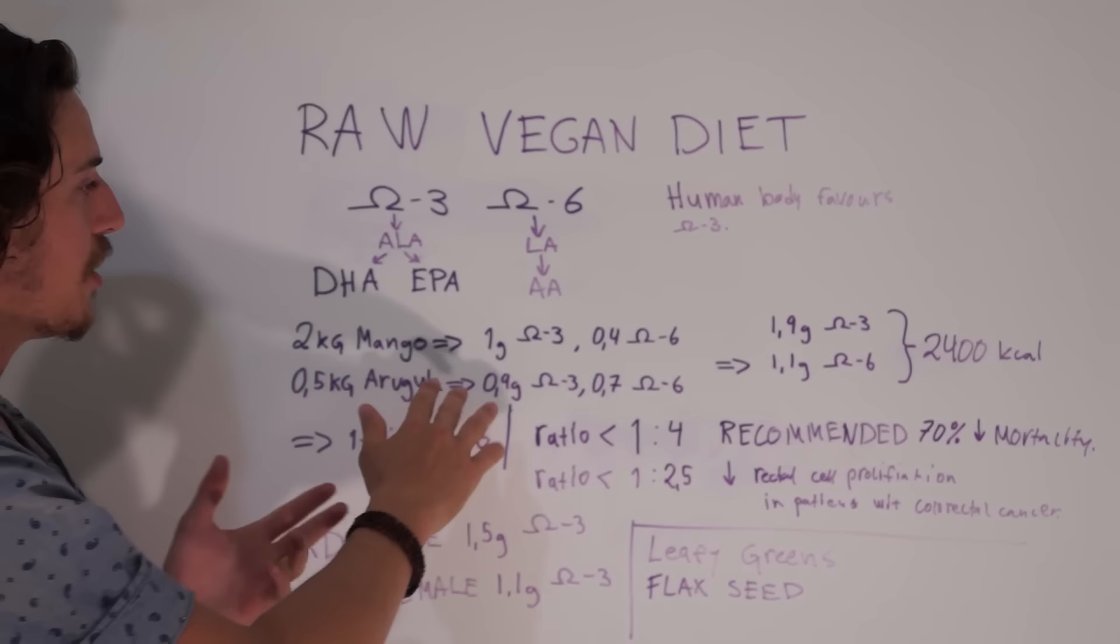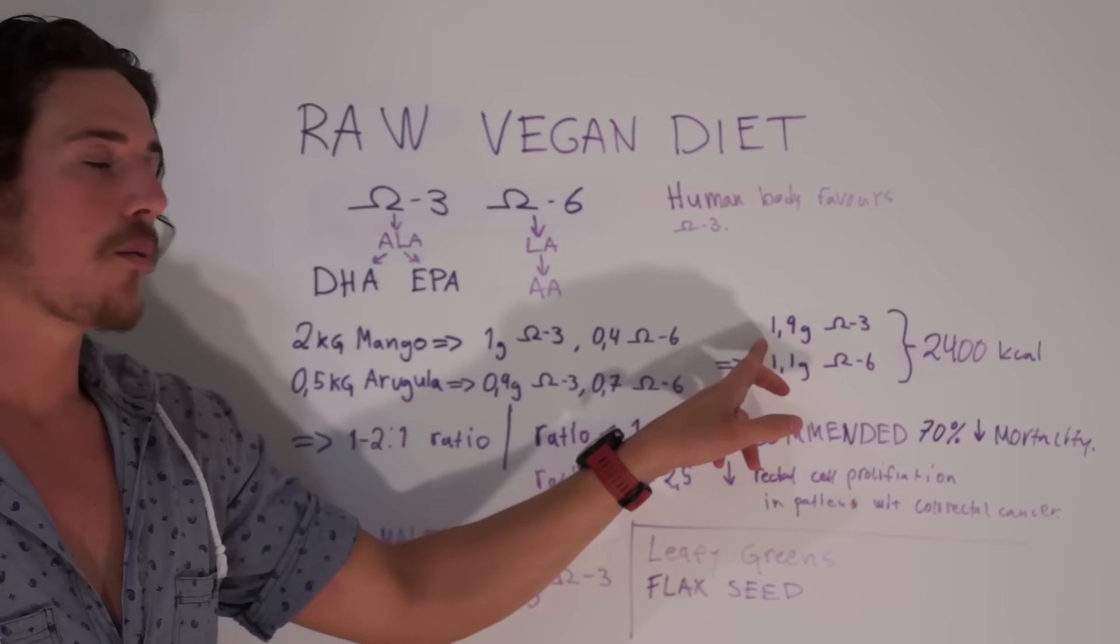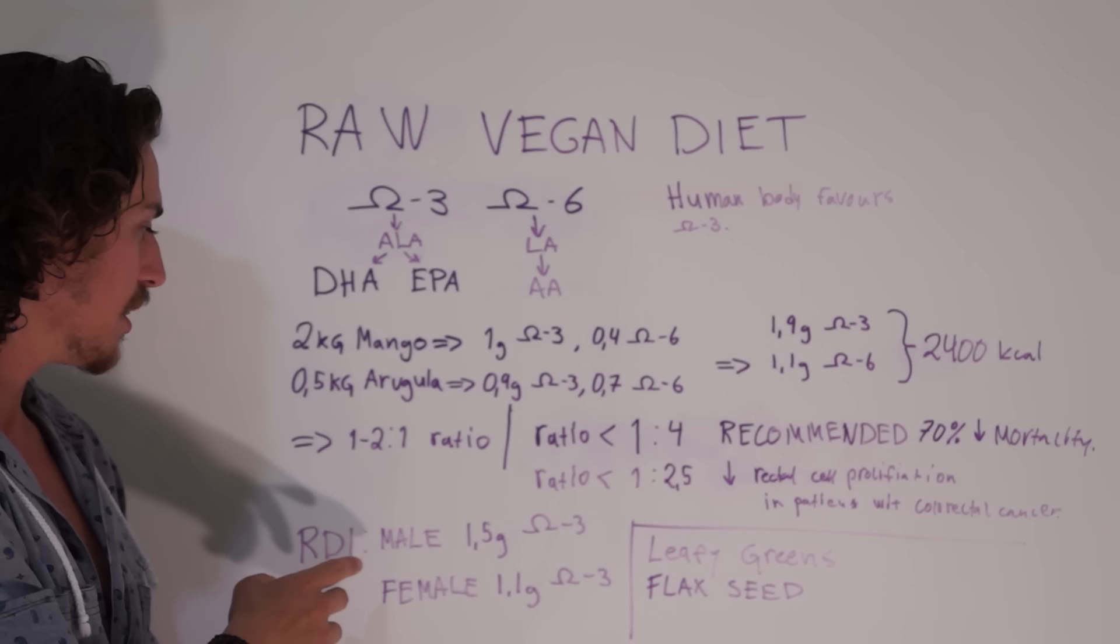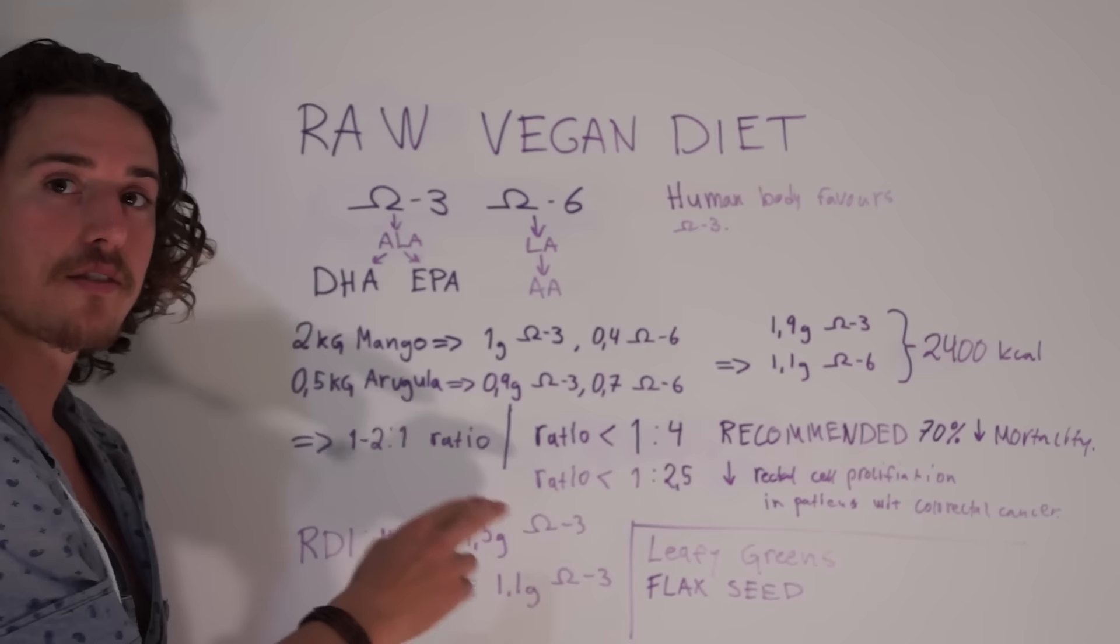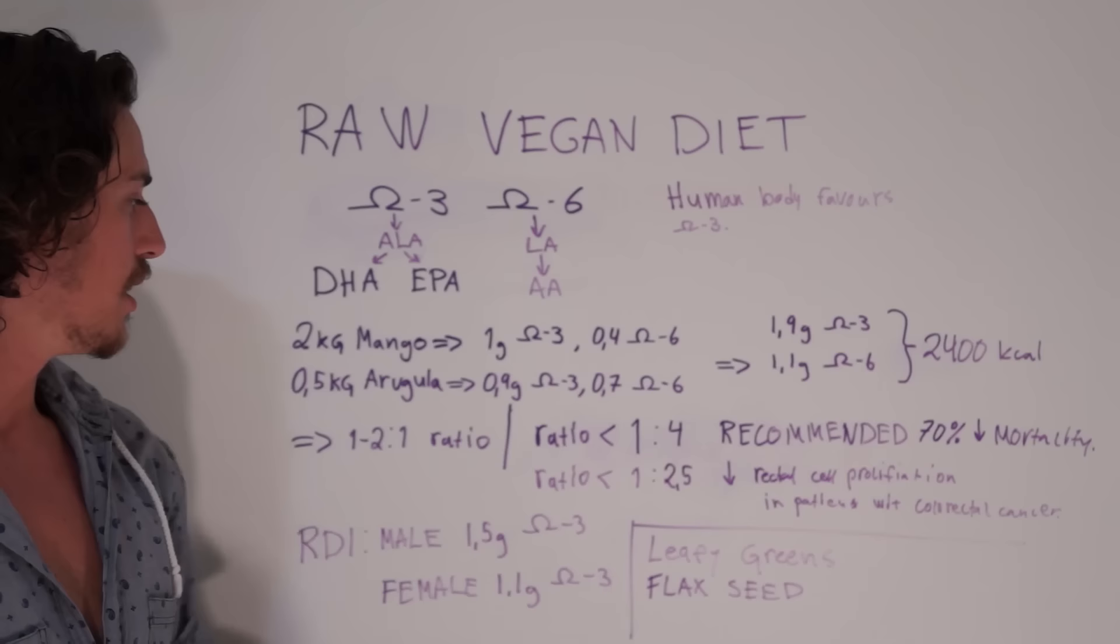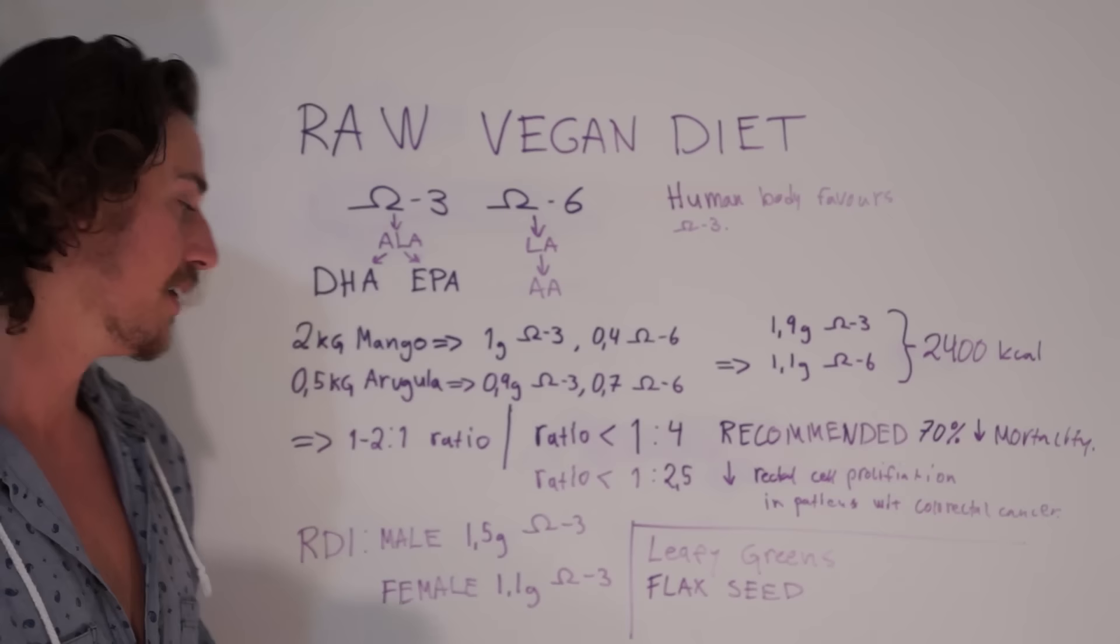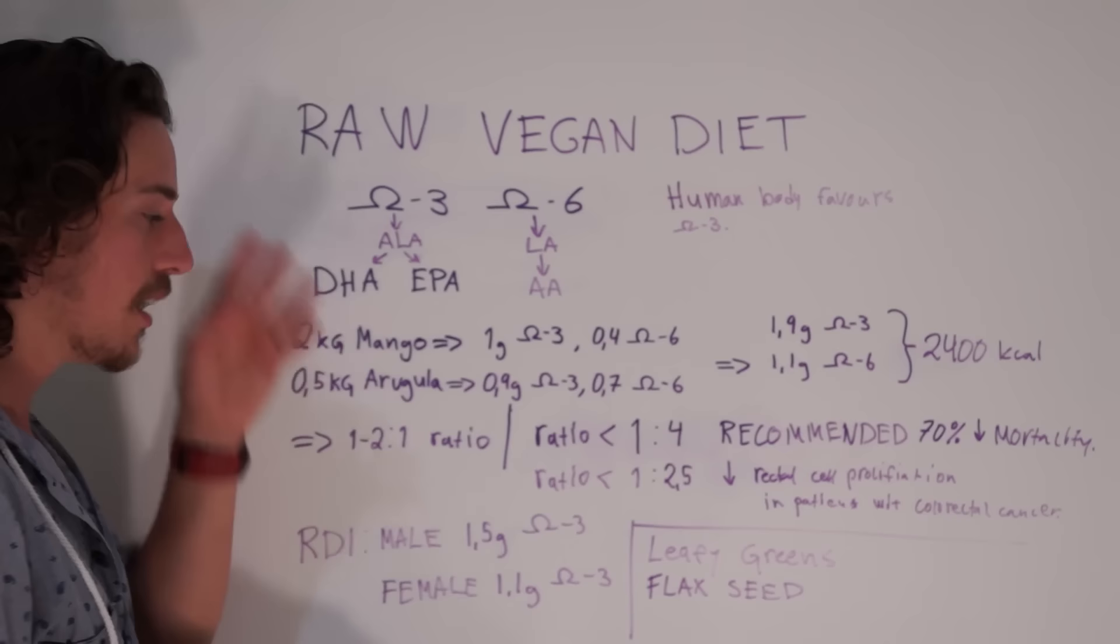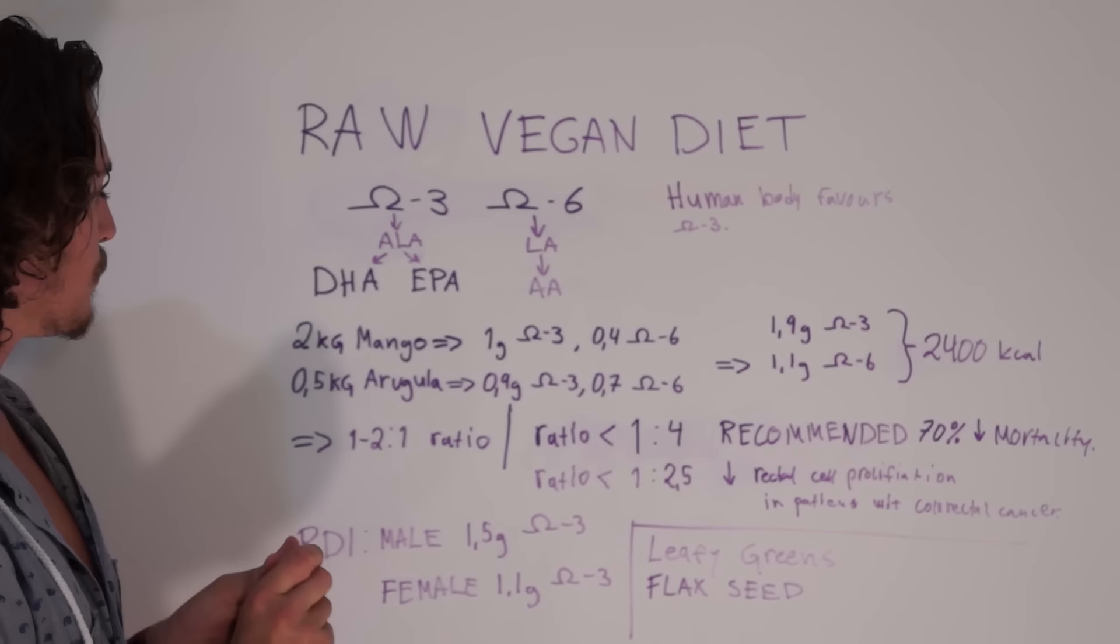2 kg of mango and half a kilo of arugula - you can see the components of omega-3 and omega-6. For this 2,400 calorie meal it sums up to 1.9 grams of omega-3 and 1.1 grams of omega-6. I checked a study and in Canada the recommended daily minimal intake of omega-3 for males is 1.5 grams. By just eating 2,400 calories we can meet the recommended daily intake easily. For females it's even lower, 1.1, because females are usually smaller than males.